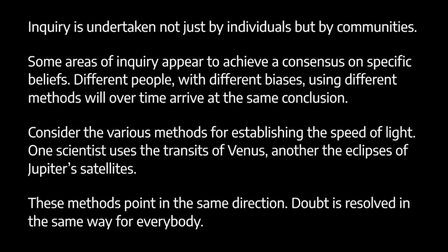Other people can take that conclusion for granted in their own inquiries and build on it. Peirce gives the example of attempts to establish the speed of light. One scientist might proceed by studying the transits of Venus and the aberrations of the stars; another might look at the oppositions of Mars and the eclipses of Jupiter's satellites. Initially they might obtain slightly different results, but as these methods are perfected we find they point in the same direction, gradually converging on a single precise figure. Today the speed of light is established by many experimental methods and scientists just take it for granted.